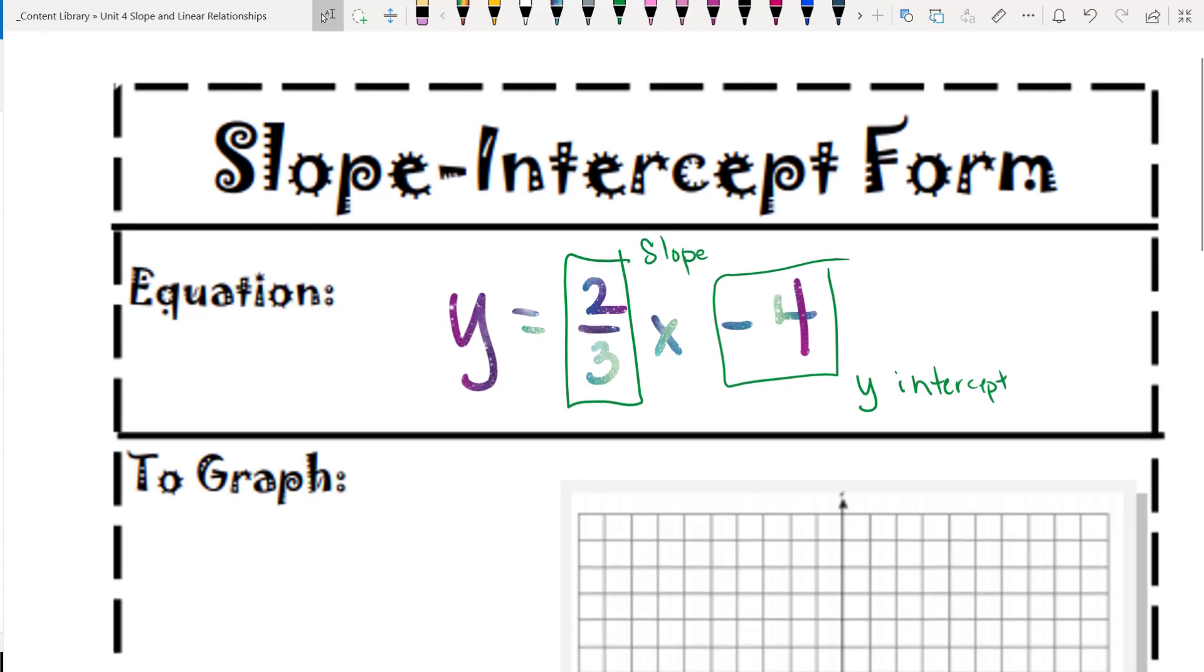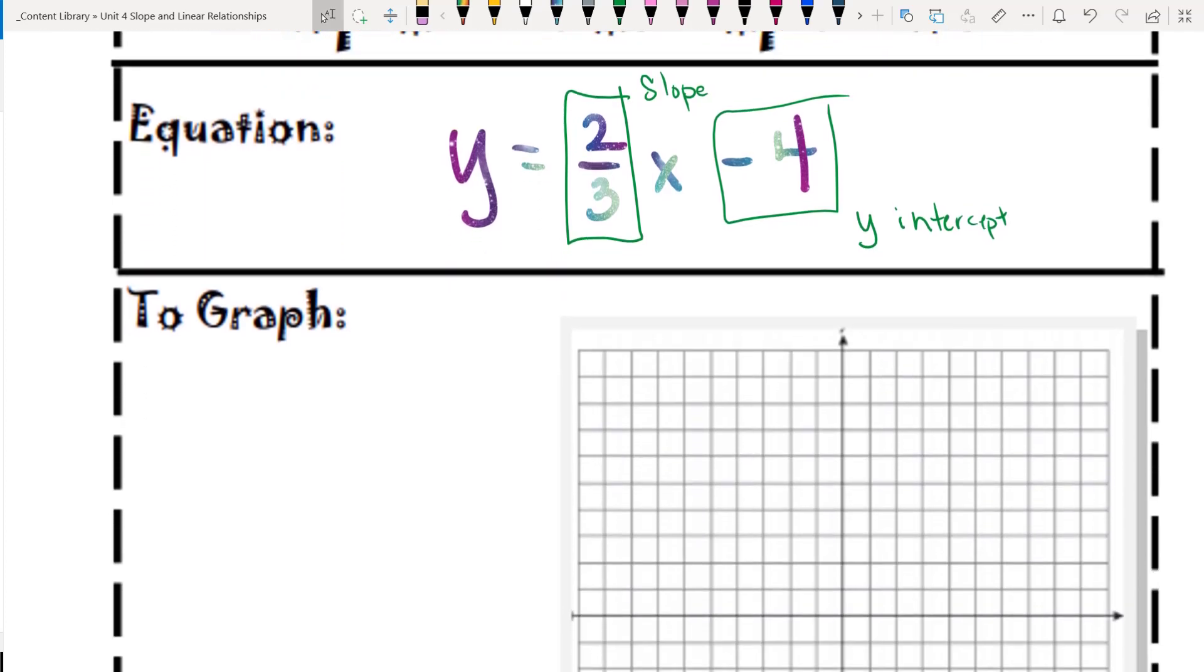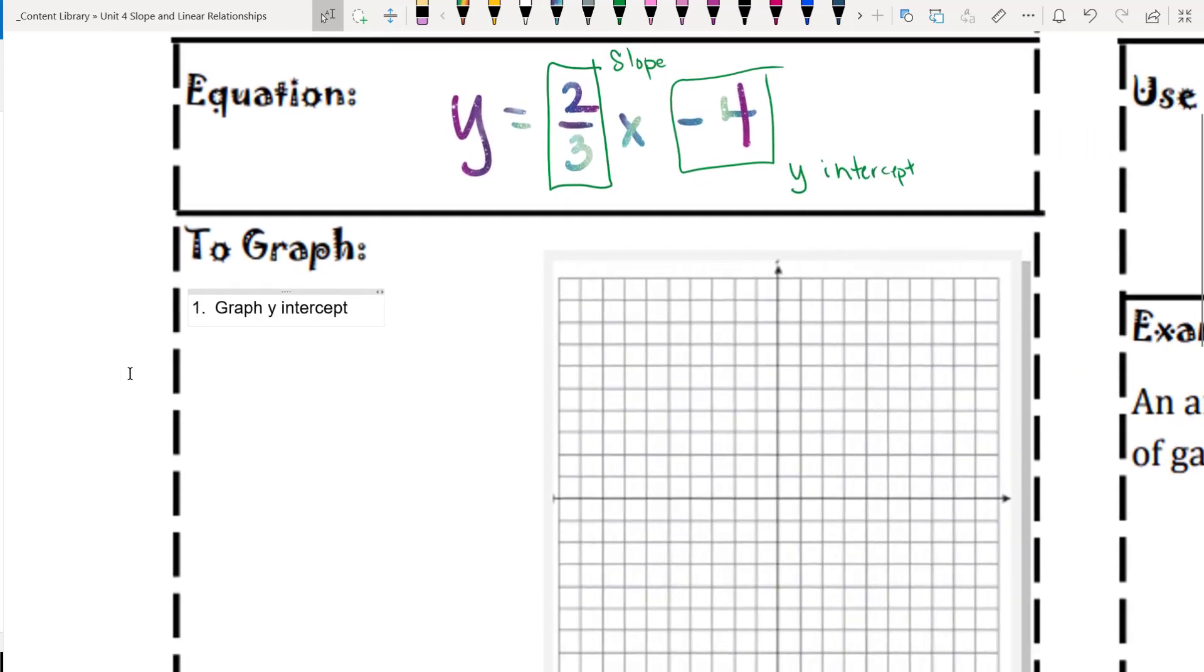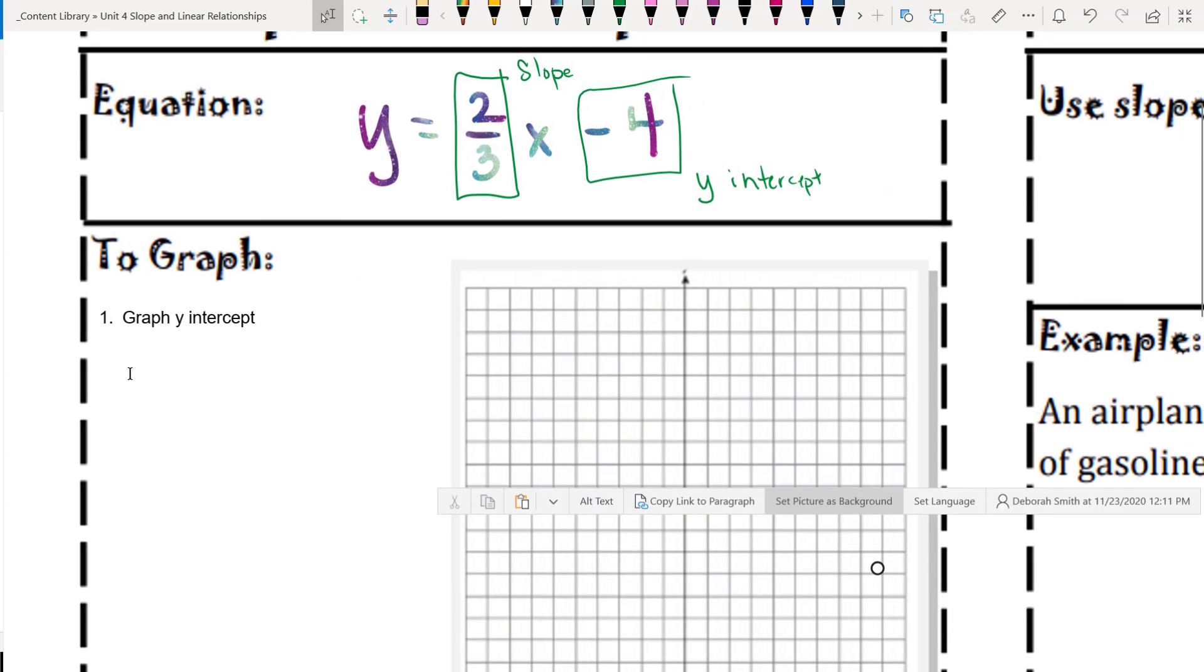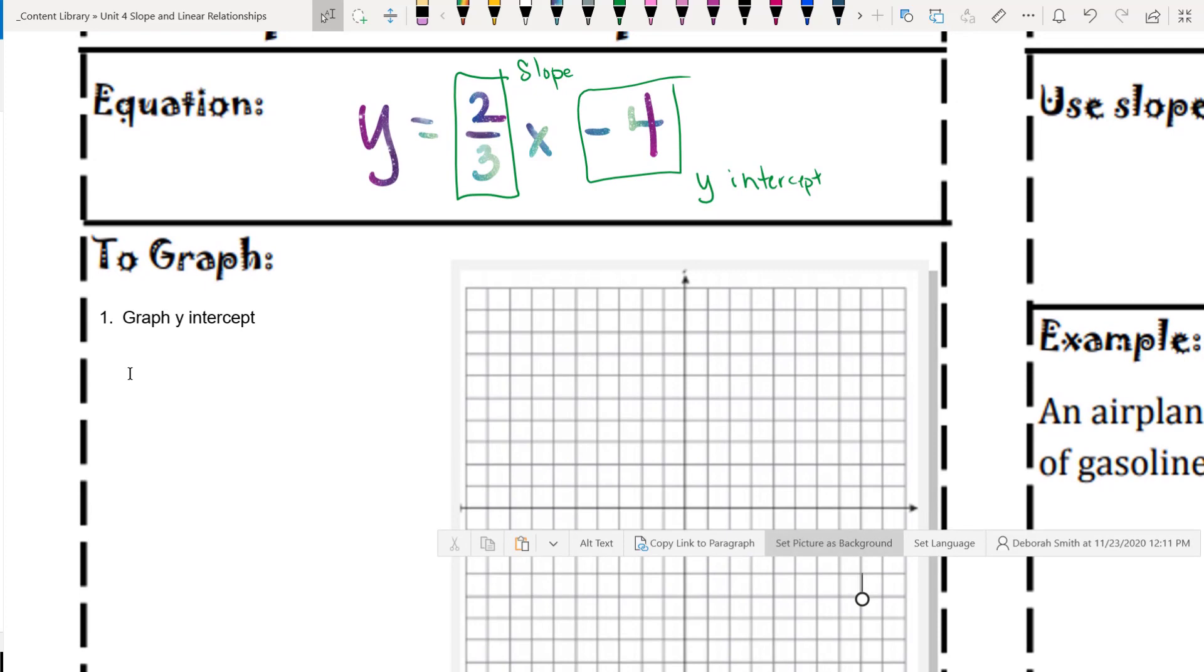So to graph this equation that's in slope-intercept form, our first step is to graph the y-intercept, and it goes on the y-axis. So if my y-intercept is negative 4, then that's going to go on the y-axis at negative 4.